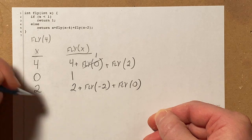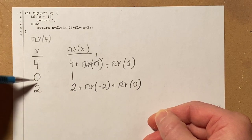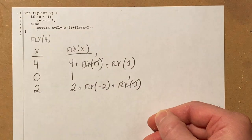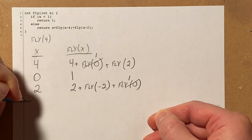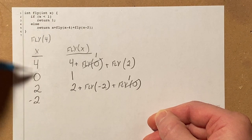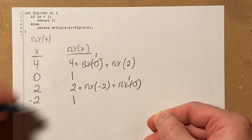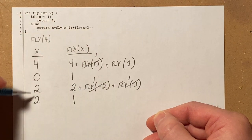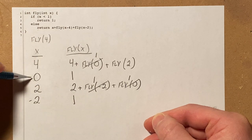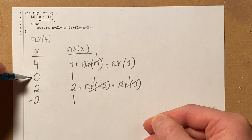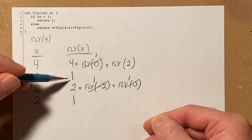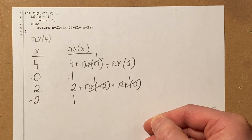A couple things to note here. First of all, fly of 0, we already figured out, is 1. So I can substitute that. I can create here negative 2 and say if negative 2 is less than 1, that's true. So that returns 1. So I could replace this by 1. I might be able to reduce the number of rows here by simply replacing this row and saying if it's less than or equal to 0, it will always be 1. That could work too.